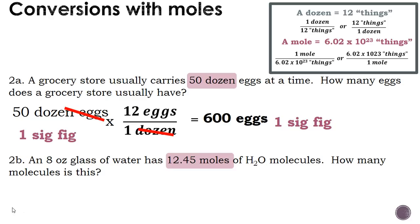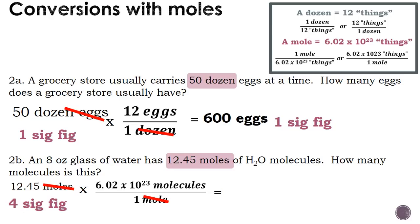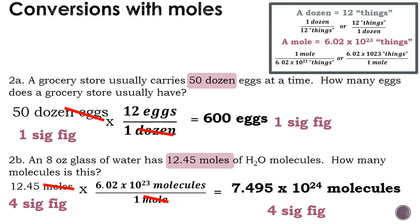Relating that to a chemistry problem: an 8-ounce glass of water has 12.45 moles of H₂O molecules — how many molecules is this? We start with the number given in the problem. We want moles to cancel, so we use the conversion factor and replace 'things' with molecules. Moles cancel, and our answer has 4 sig figs, giving us 7.495 times 10 to the 24th molecules.